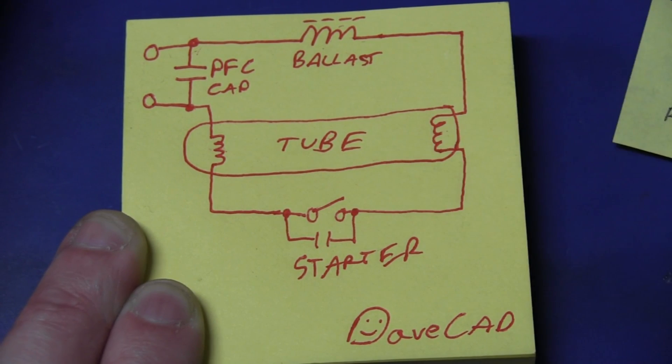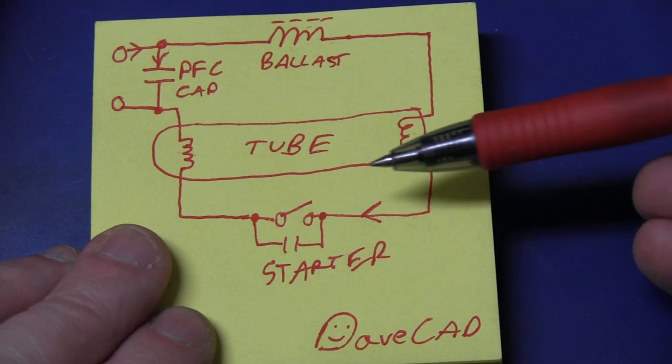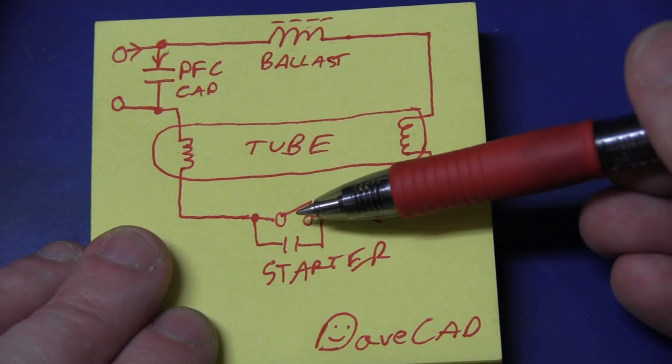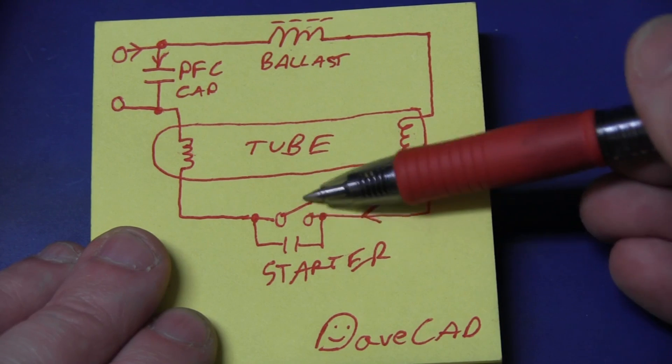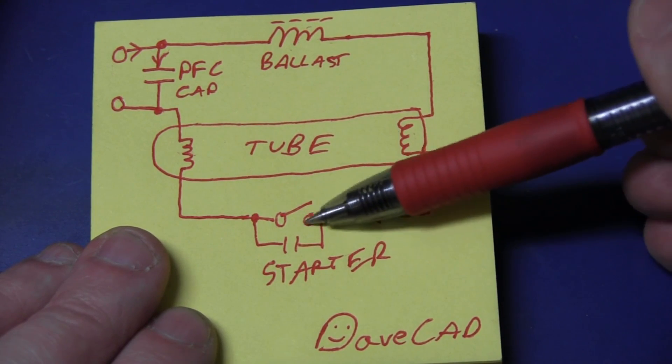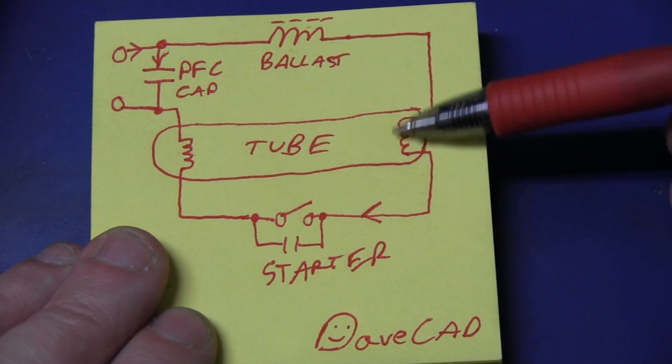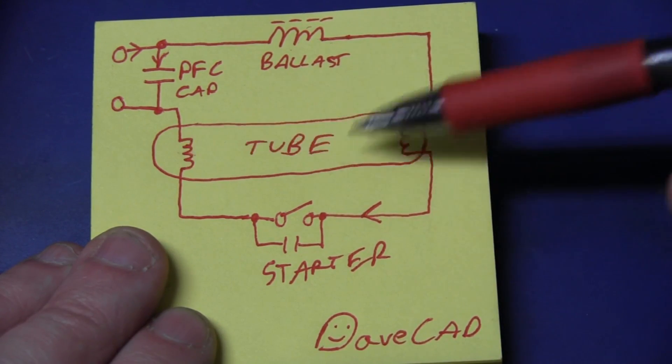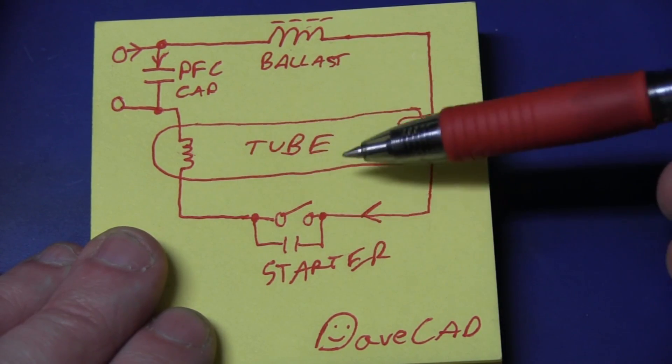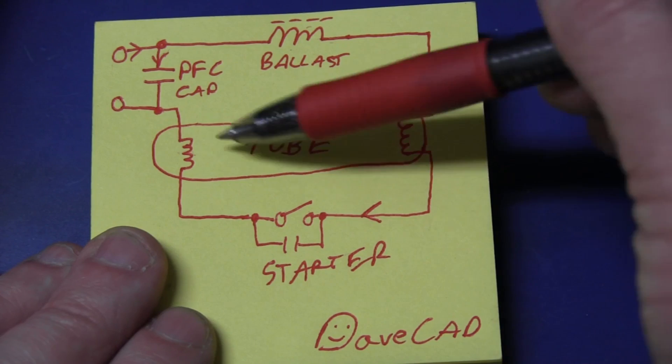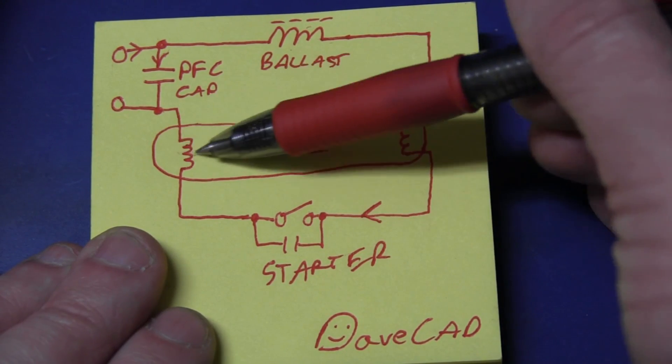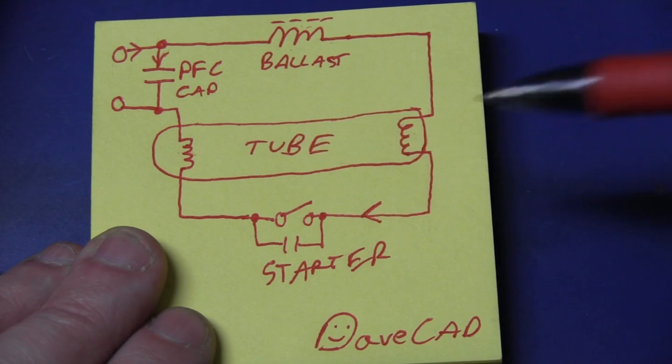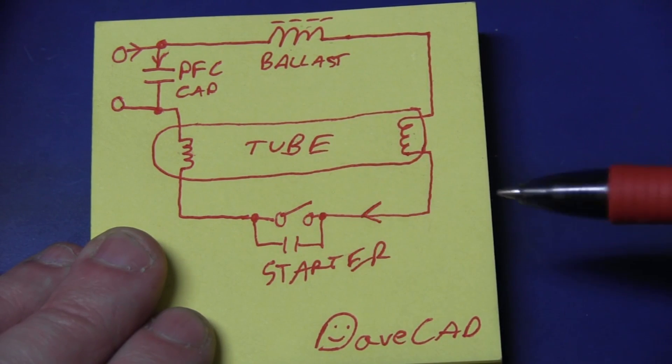And the starter just has an RFI suppression cap built across the contacts there. Because when this contact discharges, of course, there's lots of RFI there. And the reason these things flicker occasionally is because this starter, if it opens at the wrong time, it usually just contains a metal strip in there. And when it heats up, then it opens. So the timing's not very exact. So if it opens at the wrong time, then there's not enough inductive kick to generate the high voltage required to switch on the electrons flowing through the tube. So it starts again and after a couple of attempts, it'll finally luck upon it and start it up and kick on the tube. And once it is, of course, the current actually flows, the electrons flow through the tube itself, the vapor inside there. And the starter has no effect at all.